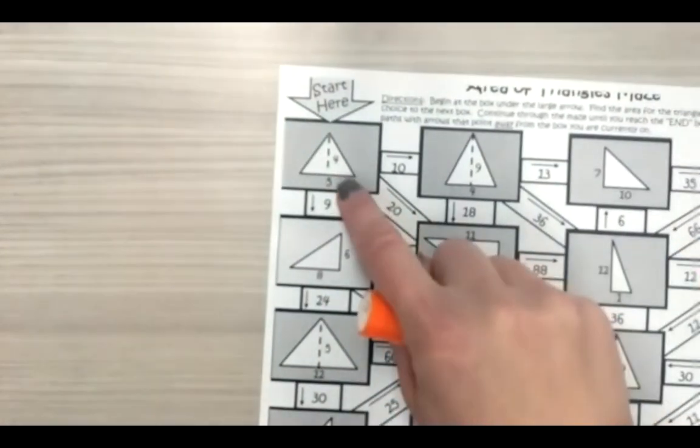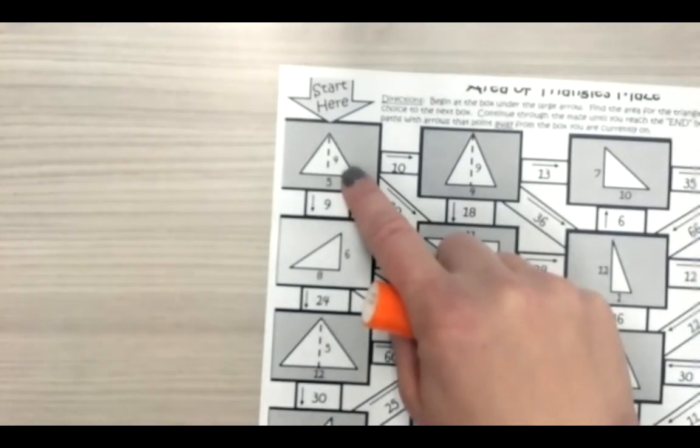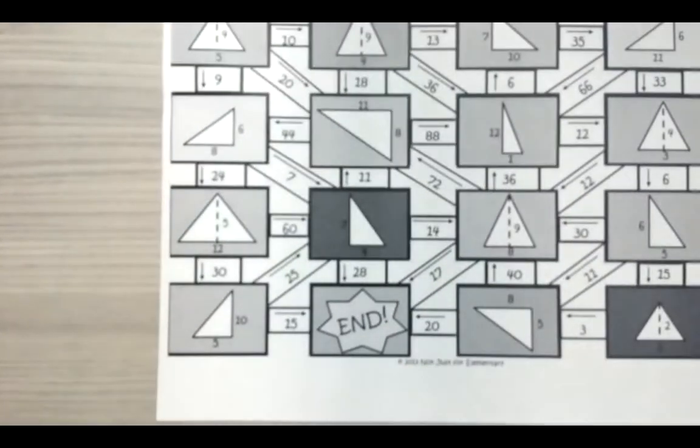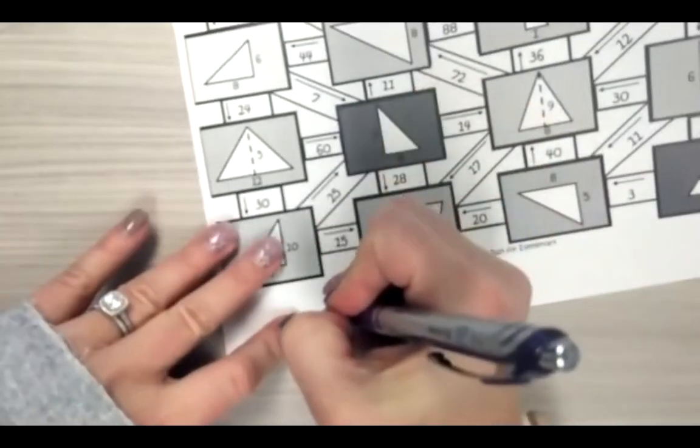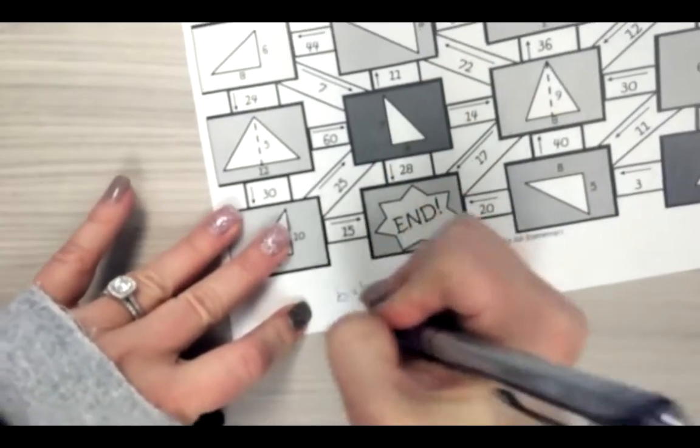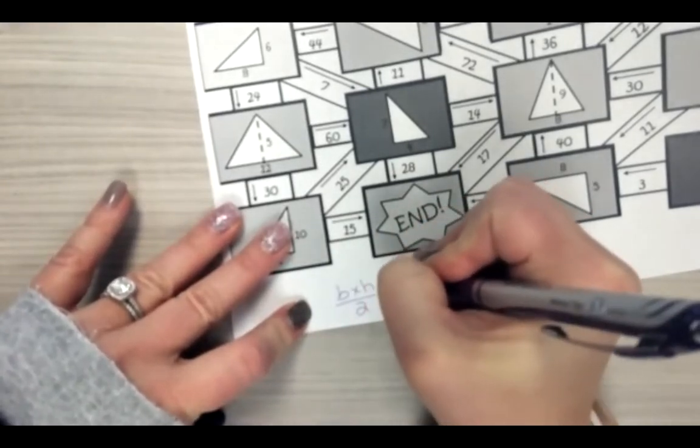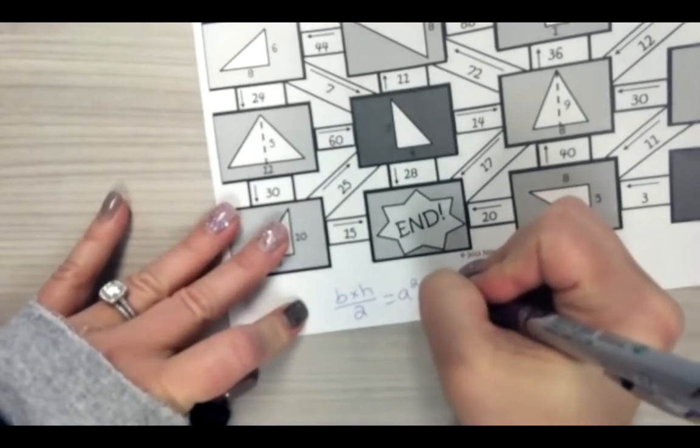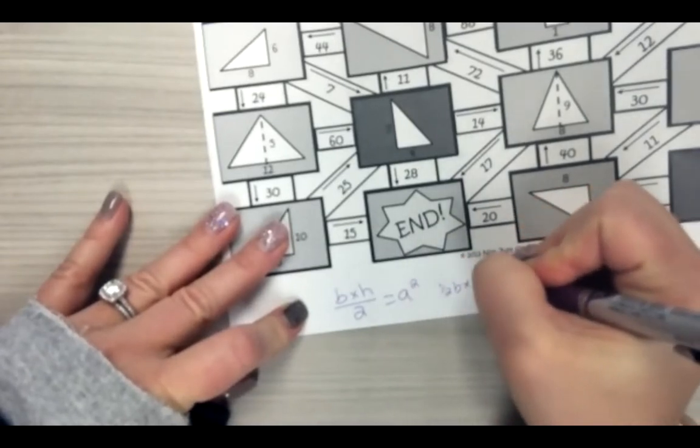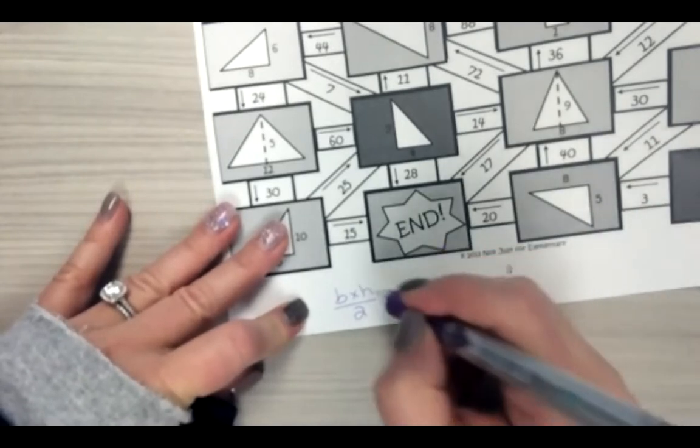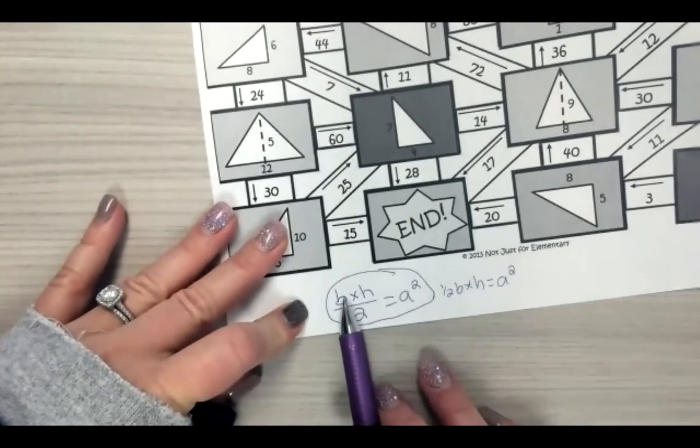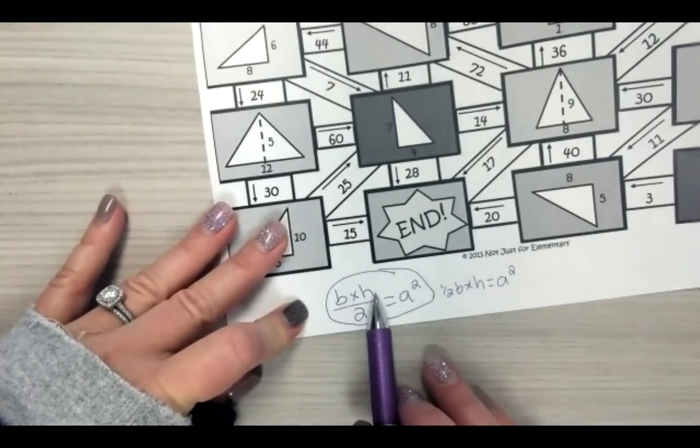So we have a triangle that is height is four and base is five. Now I'm going to use just base times height divided by two equals area squared. Some of you might use half base times height equals area squared. That's fine. But this one's my personal favorite. I just like to act as though it's a rectangle because rectangles is base times height. Right.